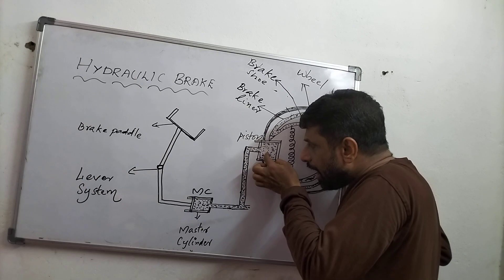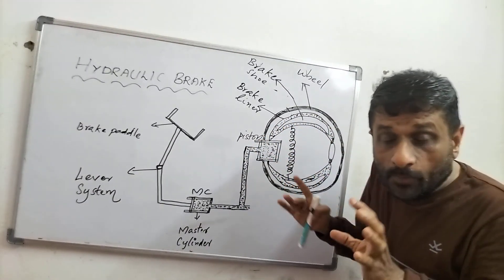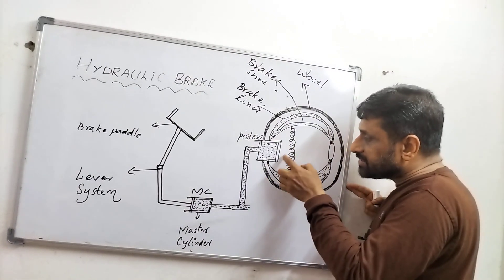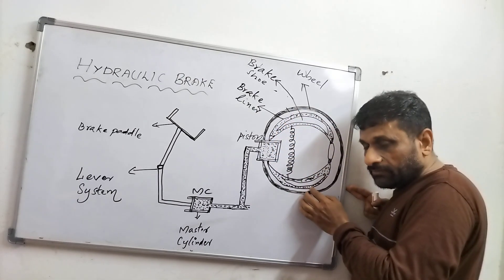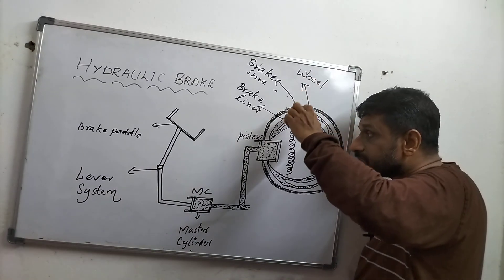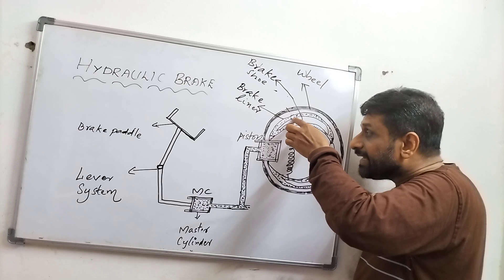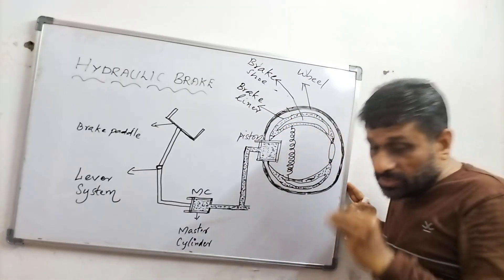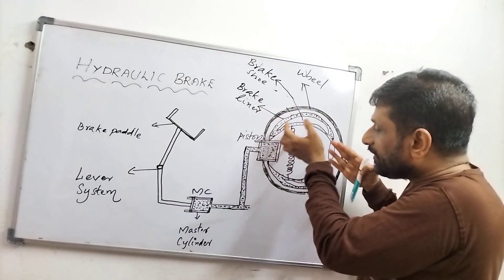A large force appears on the piston due to the transmission of pressure equally in all directions. Because of this, the brake shoes open up wider and press against the brake liner of the wheels. The brake liner of the wheels brings the vehicle to rest.